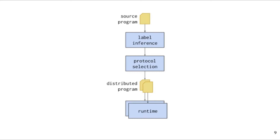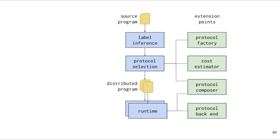The Viaduct compiler has two main phases. First, during label inference, it takes the source program and infers security requirements for each program component. Next, during protocol selection, it uses these security requirements to select efficient protocols for each component that can satisfy the security requirements. The output of protocol selection is a map from program components to the protocols that will implement them. Principals can execute the generated program together using the Viaduct runtime. The compiler provides a small set of extension points to allow developers to add support for new cryptographic mechanisms.